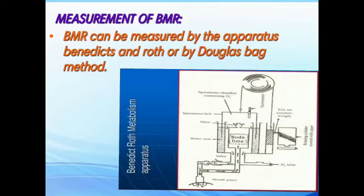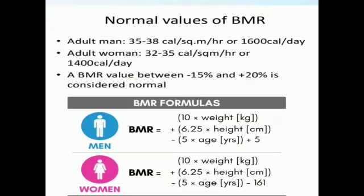Measurement of BMR: BMR can be measured by apparatus using calorimetry. Normal values — adult men: 35–38 kcal/m², approximately 1600 calories per day. Adult women: 32–35 kcal/m², approximately 1400 calories per day. A BMR value between minus 15% and plus 20% is considered normal.